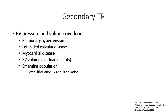By comparison, secondary TR is a result of RV pressure and volume overload from conditions such as pulmonary hypertension, left-sided valvular disease, myocardial disease, RV volume overload secondary to intracardiac shunts, and an emerging population with atrial fibrillation as the predominant mechanism leading to annular dilatation and thus secondary TR.